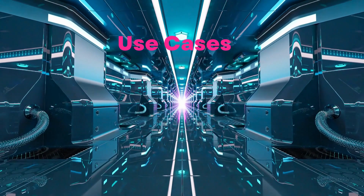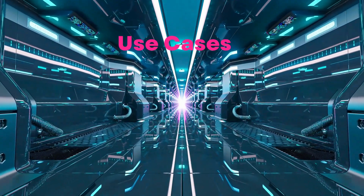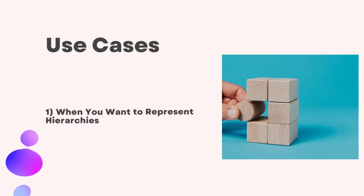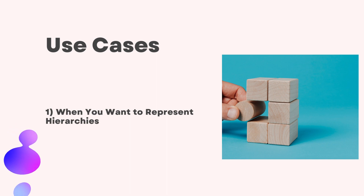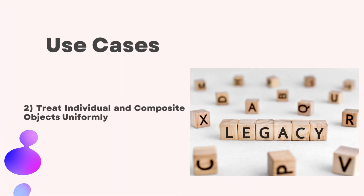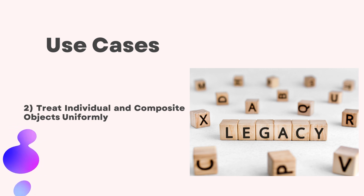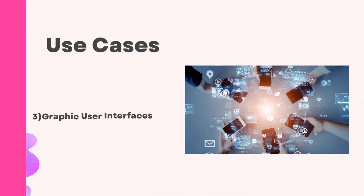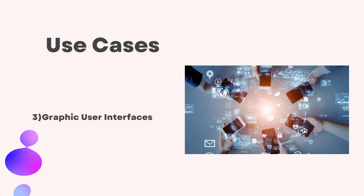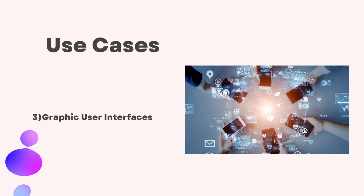Let's talk about the use cases. When would we apply the composite pattern? First, when you want to represent hierarchies: just as you would use a tree to represent a biological hierarchy, the composite pattern is useful when you want to represent part-whole hierarchies in your system. Second, when you want to treat individual and composite objects uniformly, just like you water the entire tree and not each leaf separately. Third, graphic user interfaces: just as a tree is composed of smaller branches and leaves, graphic user interfaces often involve complex nesting of different types of elements, making the composite pattern a useful tool for view development.